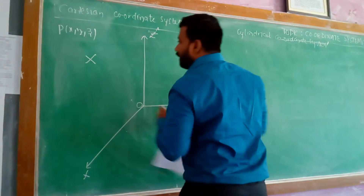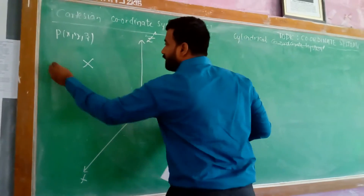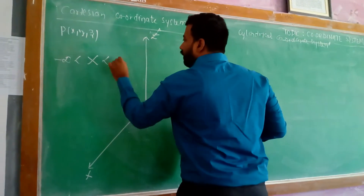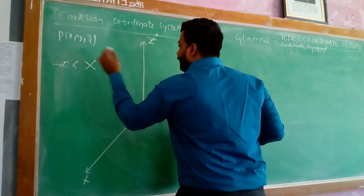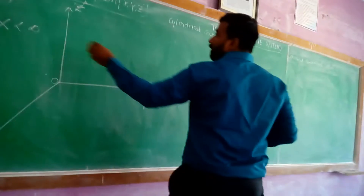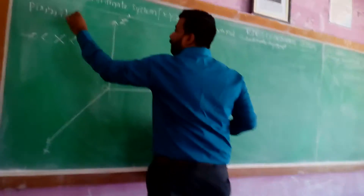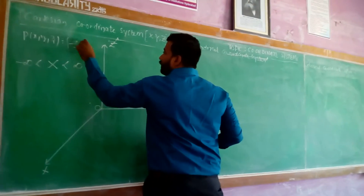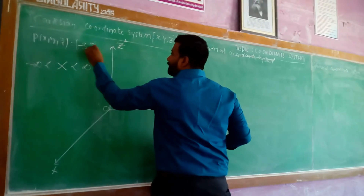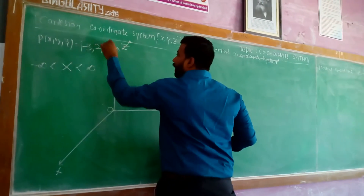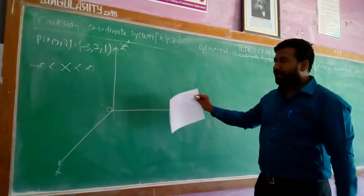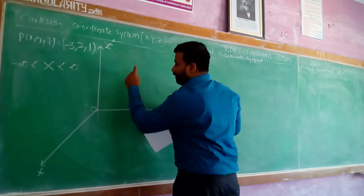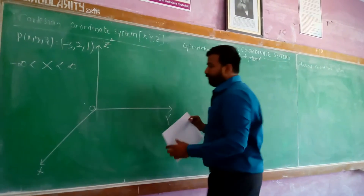Therefore, the range of x is minus infinity to plus infinity, as we can have points which have a negative value. For example, the point (−3, 2, 1): here x is minus 3, plotting on the negative side of the x axis, which is the other side of the board.